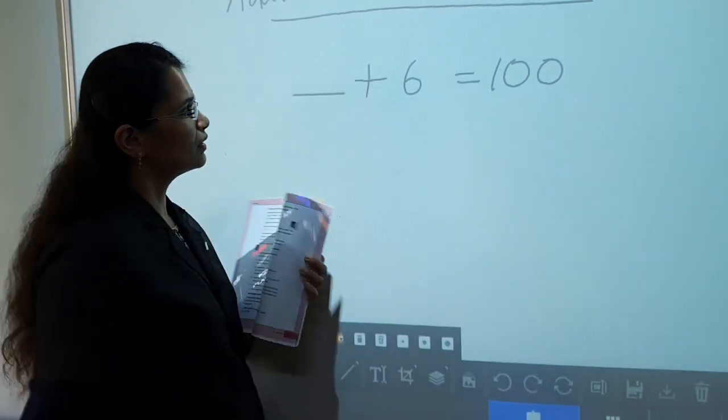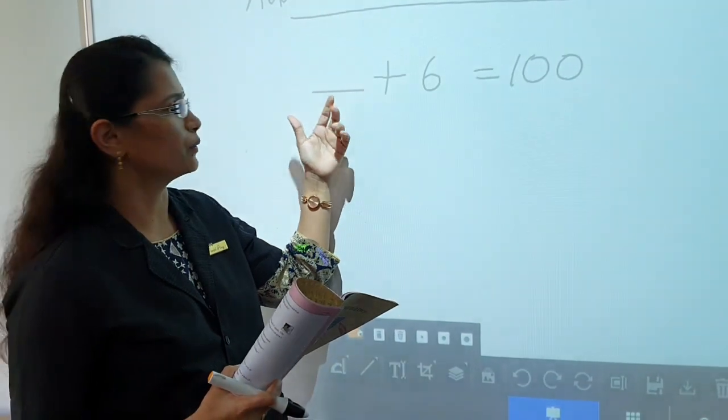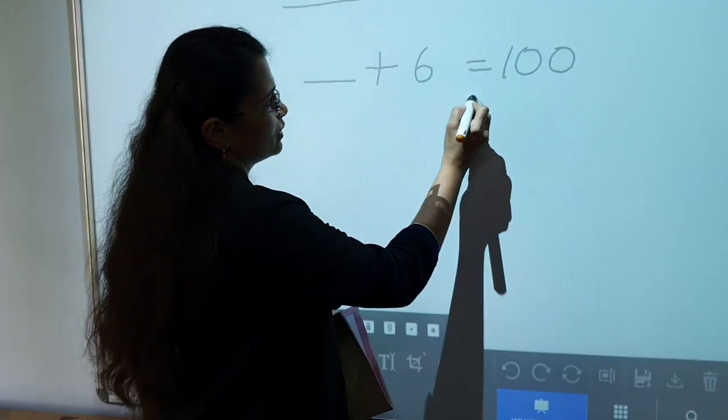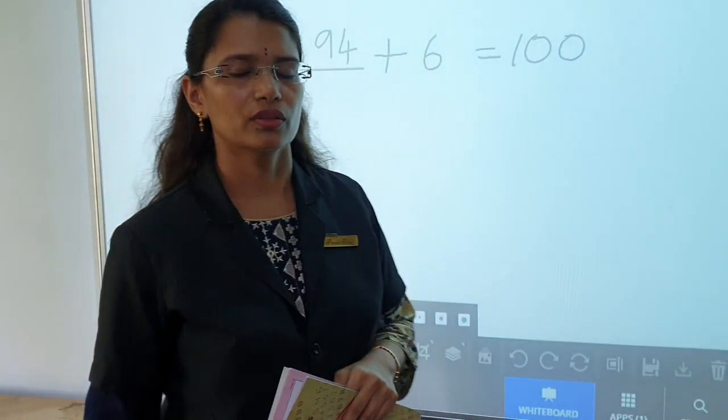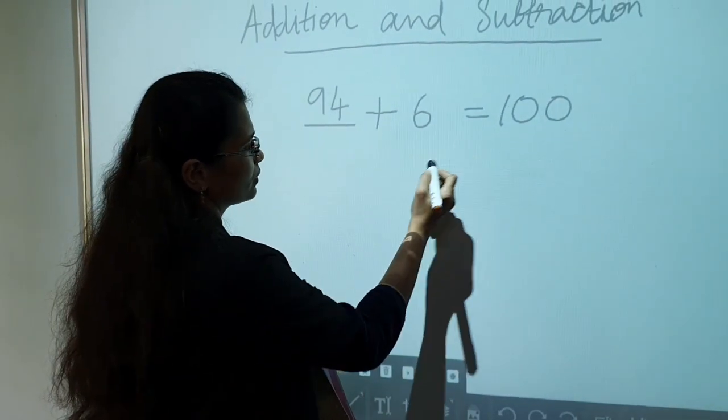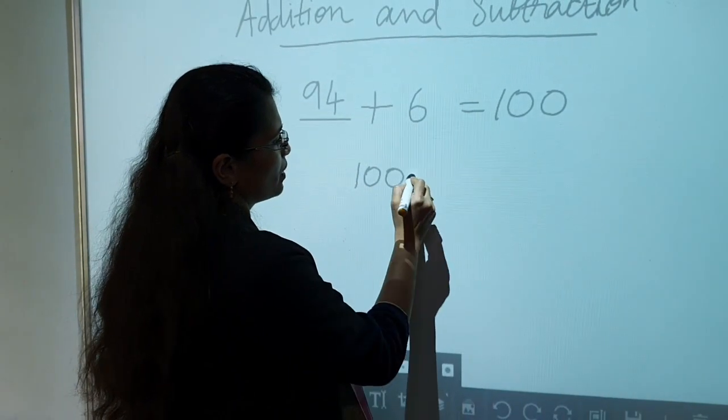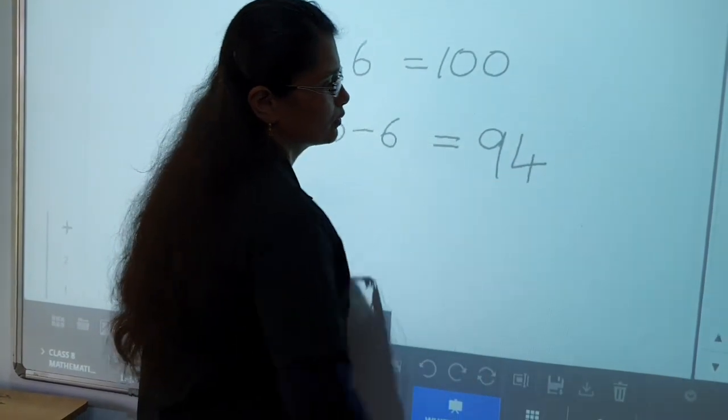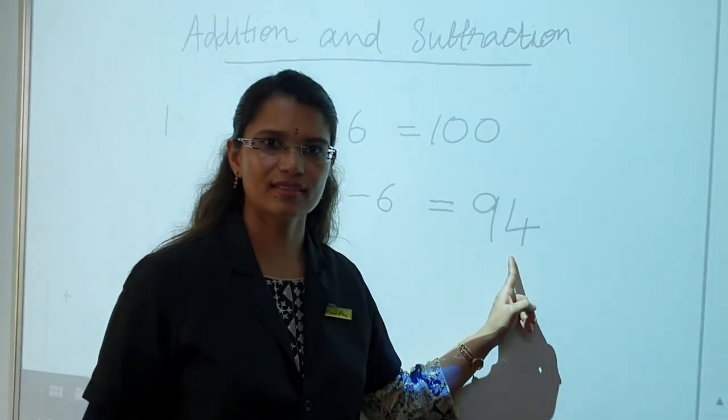6 more marks and I would have got full 100 marks. 6 more. So plus 6 is equal to 100. Here, this is the answer. We have to find out. Dash plus 6 is equal to 100. What is the answer here? We know that it is 94. How did you get this 94? The concept is here. The concept here is subtraction. 100 minus 6 is equal to 94. Children, the first question answer is 94.